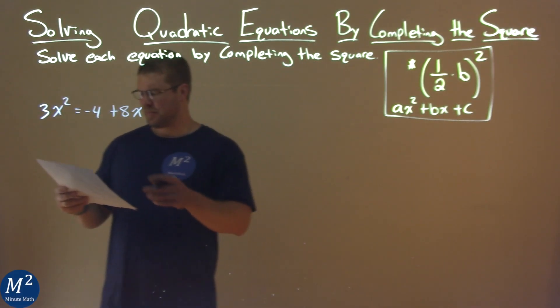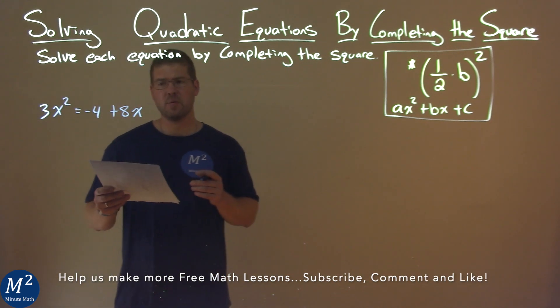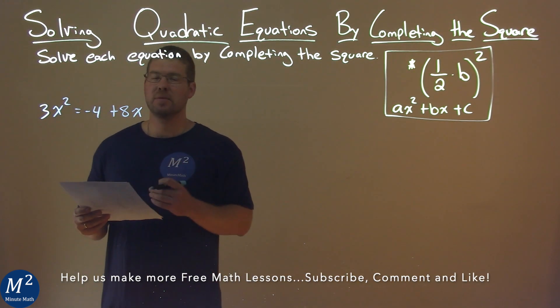We're given this problem right here: 3x² equals -4 + 8x, and we need to solve this by completing the square.